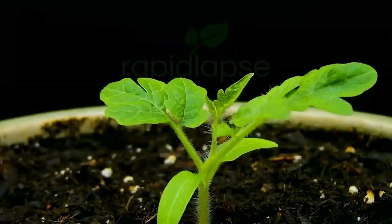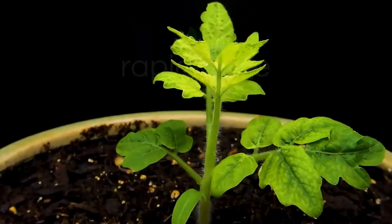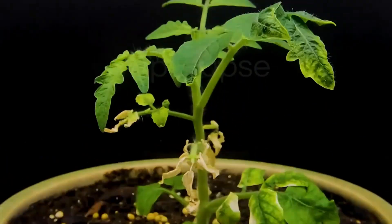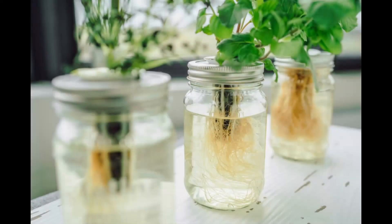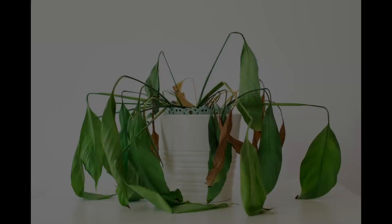To make plant care more streamlined, there are a variety of solutions, from self-watering pots to hydroponics, but none of these take care of every single component needed for a plant to thrive.